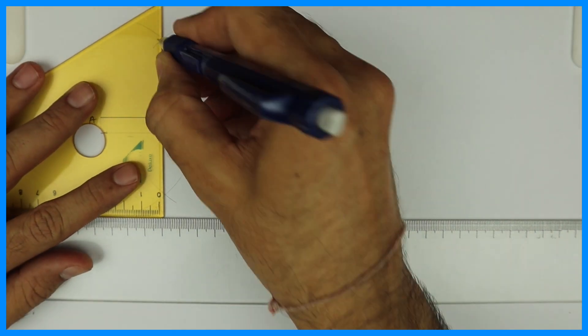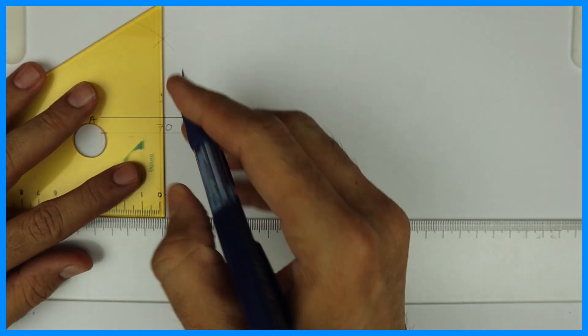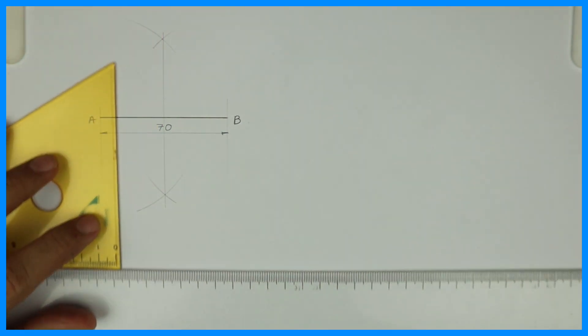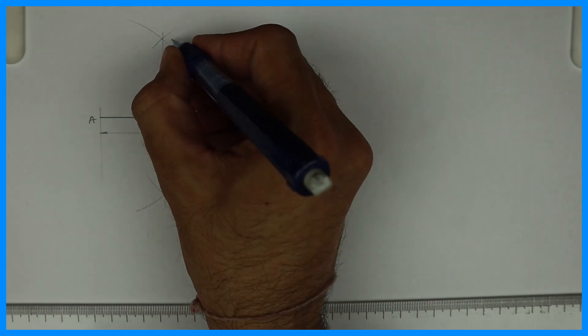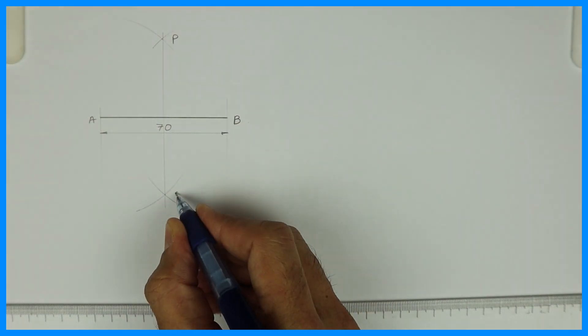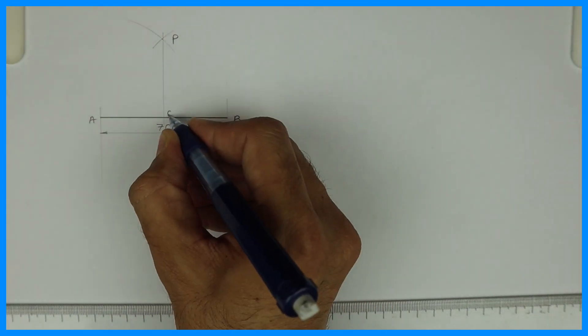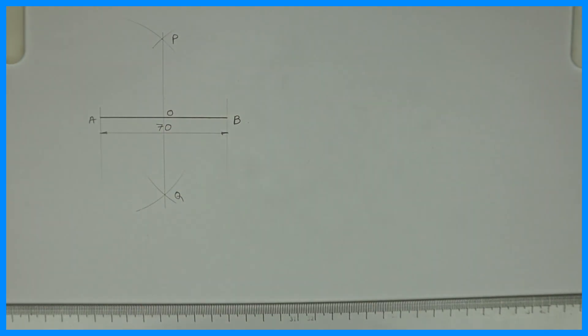And you will draw vertical line passing through these two points. See this. So this is point P, this is point Q, this is O. So you have divided line AB into two parts, AO and OB.